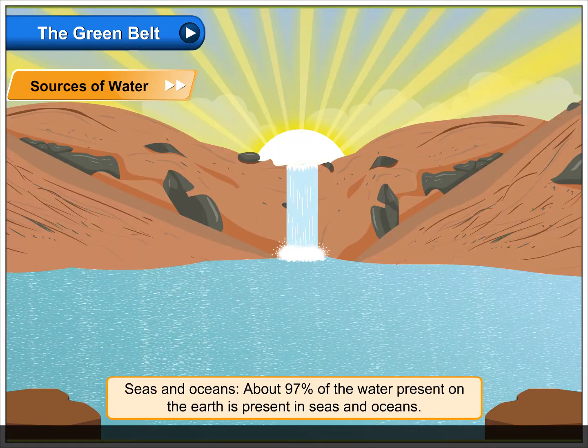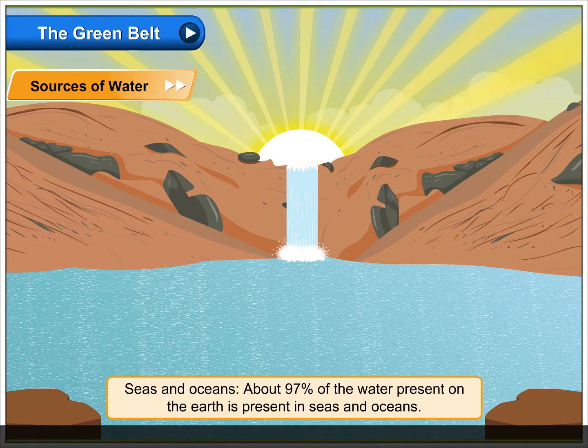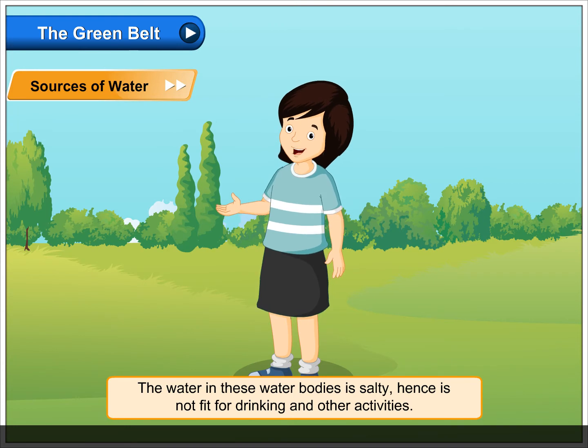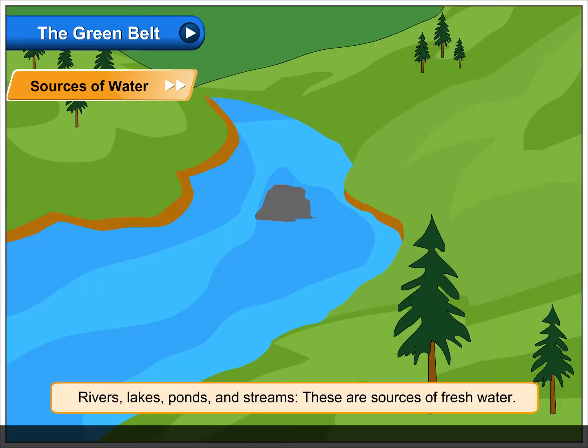Seas and oceans. About 97% of the water present on the Earth is in seas and oceans. The water in these water bodies is salty. Hence, it is not fit for drinking and other activities.